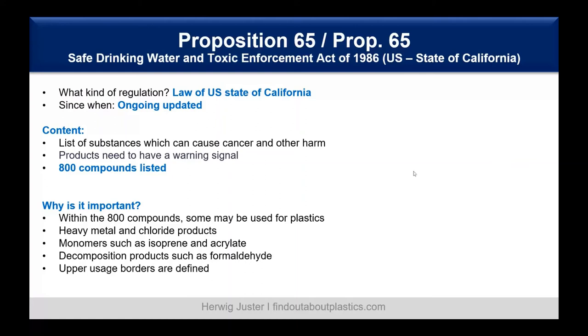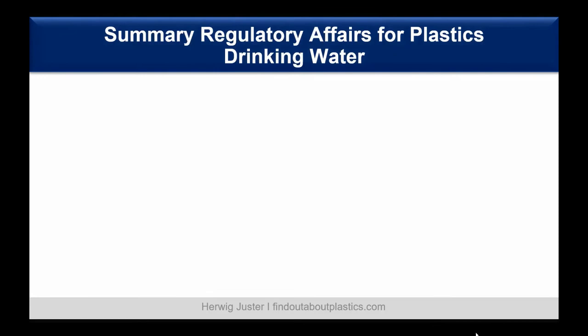Within these 800 compounds, some can be relevant or used for making plastics — for example, heavy metal chloride products, monomers such as isoprene and acrylates, and decomposition products such as formaldehyde. Upper usage limits are defined for all these substances and materials.